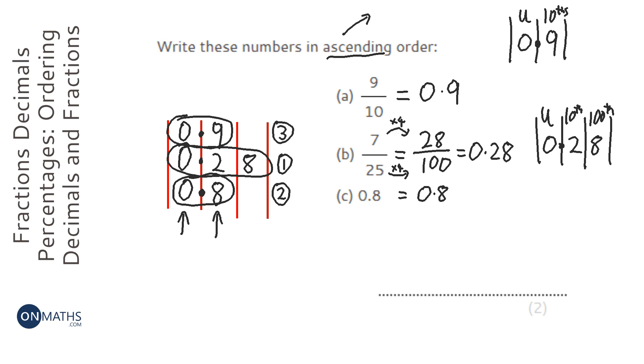Now, what's really important is when we write our answer, we don't write down the decimals, because we made the decimals, the question didn't have decimals in. So, it's really important that we write down the actual things that were in the question. So, the 0.28 was 7/25, so that's the smallest.